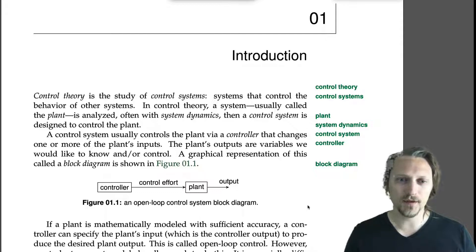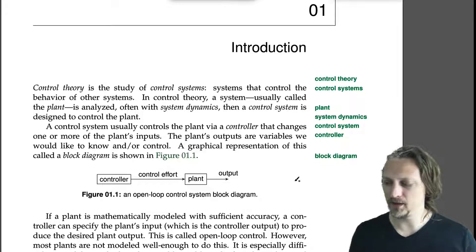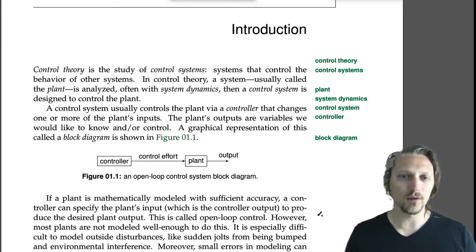The control system usually controls the plant via a controller that changes one or more of the plant's inputs. The plant's outputs are variables we would like to know and or control.